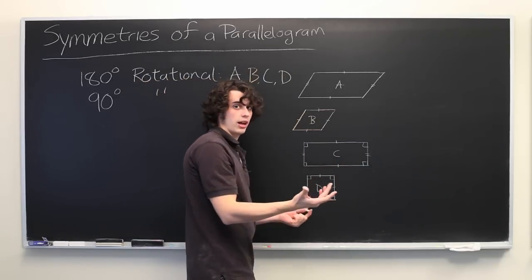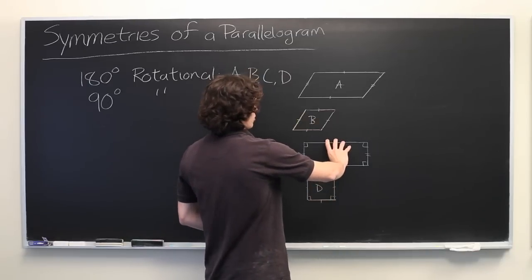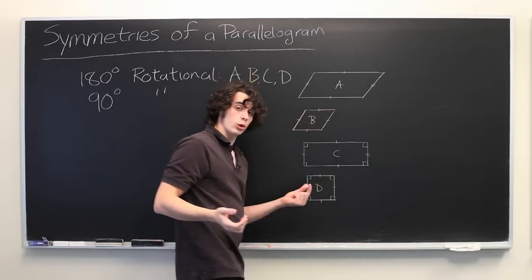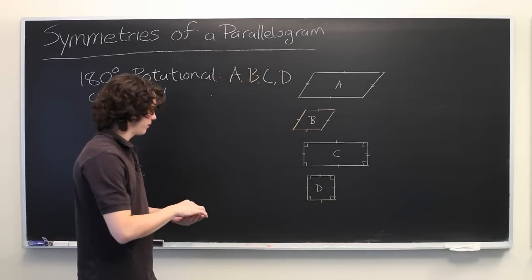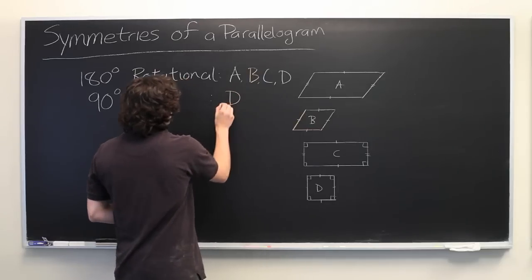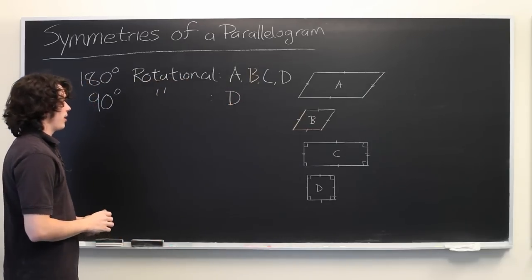The same is not true of the rectangle, for example. If you rotate a horizontal rectangle only 90 degrees, you'll get a vertically oriented rectangle. So this property only exists for parallelograms of type D.